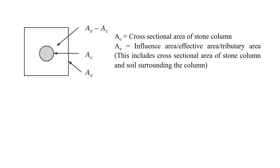AC is the cross-section area of the stone column. AE is called the influence area, effective area, or tributary area — it includes the cross-section area of the stone column and the soil surrounding the column. The area of soil surrounding the stone column will therefore be AE minus AC.